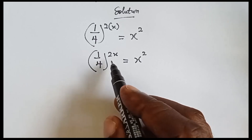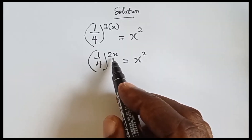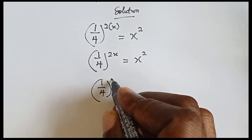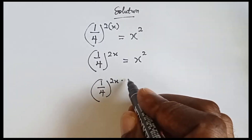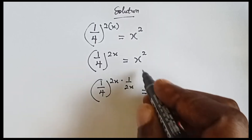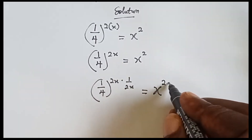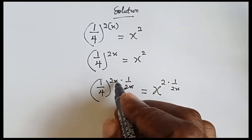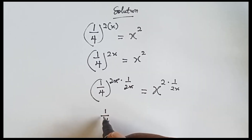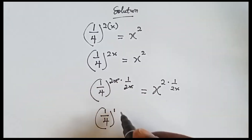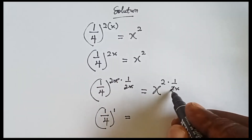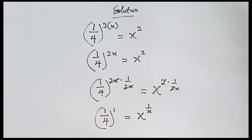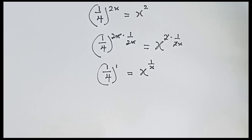So we can multiply both sides by the reciprocal of 2x. When we have 1 over 4 raised to power 2x, we multiply it by 1 over 2x, and I'm doing that to this side too — multiply by 1 over 2x. The 2x cancels, leaving 1 over 4 raised to power 1 on the left, and x raised to power 1 over x on the right.